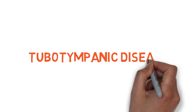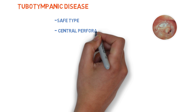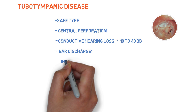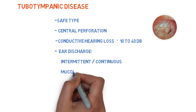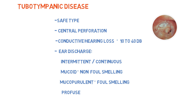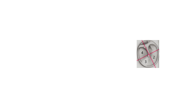Let's move toward tubotympanic disease. This image shows the tympanic membrane with a central perforation, which is the main characteristic of this disease. It is the safe type of disease because the infection does not spread to other areas. Due to this, there is conductive hearing loss of 10 to 14 dB, which may depend on the site and size of perforation. Ear discharge is present, which may be intermittent or continuous, mucoid or mucopurulent.